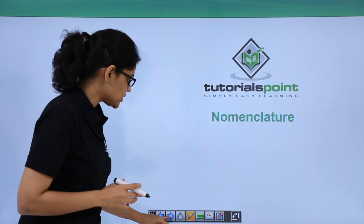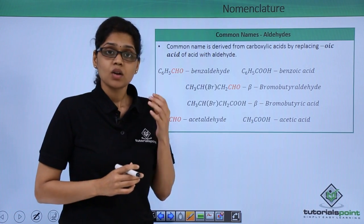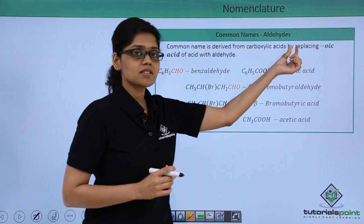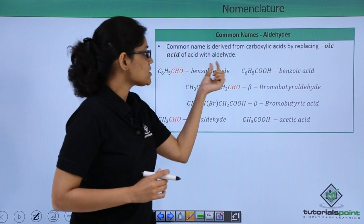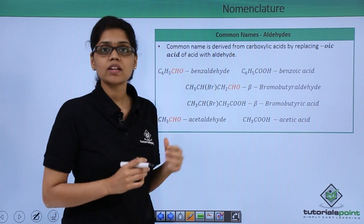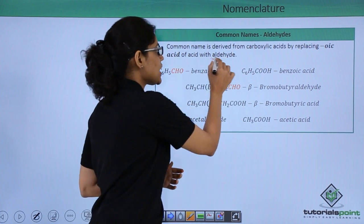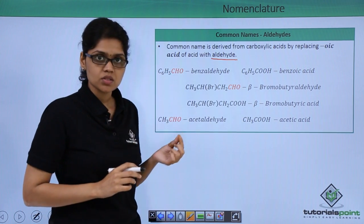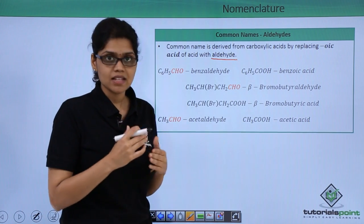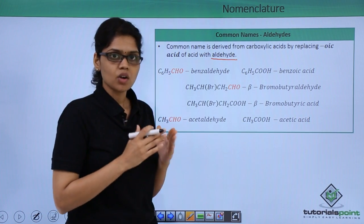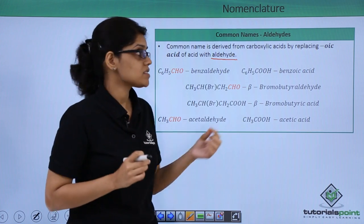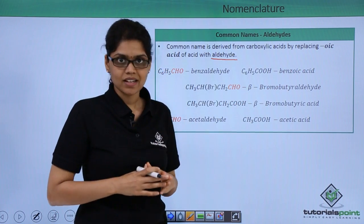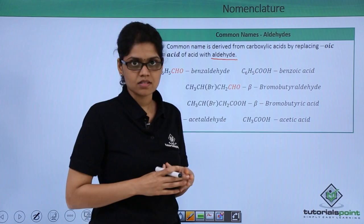Let's first see how to write the common name of aldehydes. The common name of an aldehyde is derived by replacing the '-oic acid' of the corresponding carboxylic acid with 'aldehyde'. For example, C6H5CHO is benzaldehyde, obtained by replacing the '-oic acid' of the corresponding carboxylic acid, which is benzoic acid.